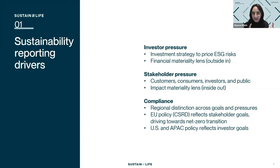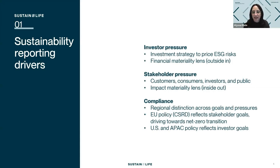Financial materiality in the world of those frameworks is defined as information that could reasonably be expected to impact or influence an investor's decision if it was omitted, obscured, or misstated. That financial materiality lens is called 'outside-in' because it looks at how environmental, social, and governance factors impact the bottom line of the company — what financial risks they are exposed to.